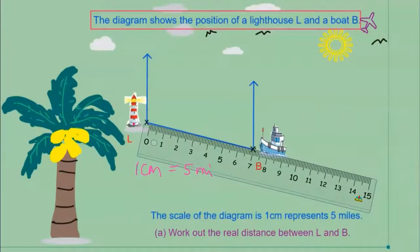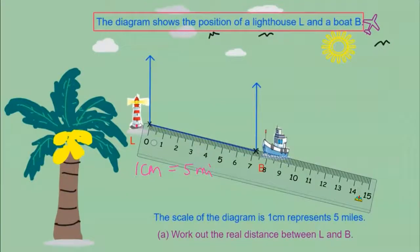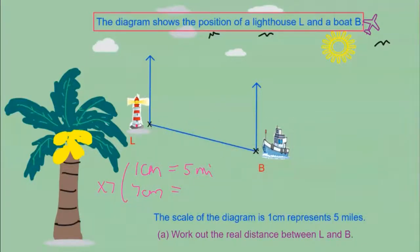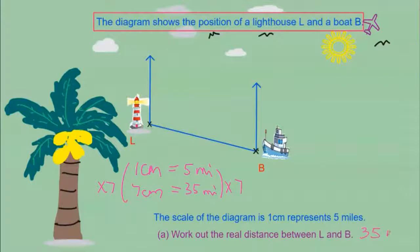You measured seven centimeters, so how much is seven centimeters in miles? We multiply one by seven to get seven, and multiply five by seven as well to get 35 miles — because what you do to the left side of the equation you do the same to the right side. So the real distance between the lighthouse and the boat is 35 miles.